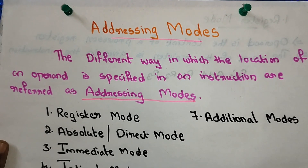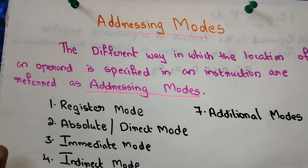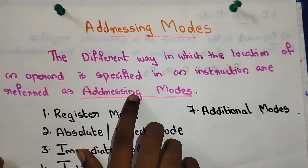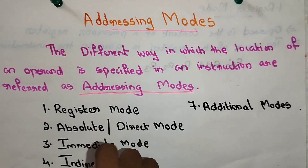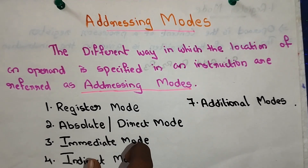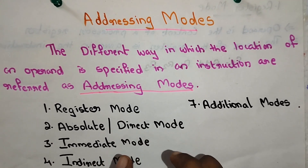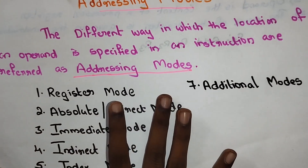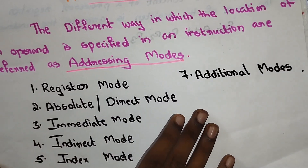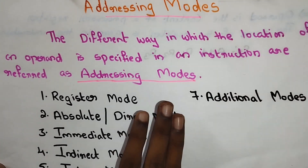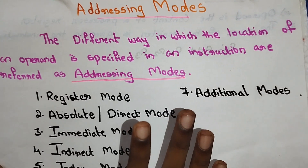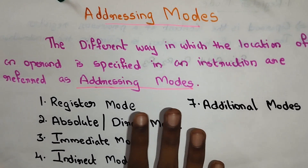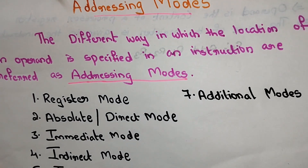Addressing modes is the definition of an operand. It is the different way in which the location of an operand is specified in an instruction. The different ways in which the location of an operand is specified in an instruction are referred to as addressing modes.